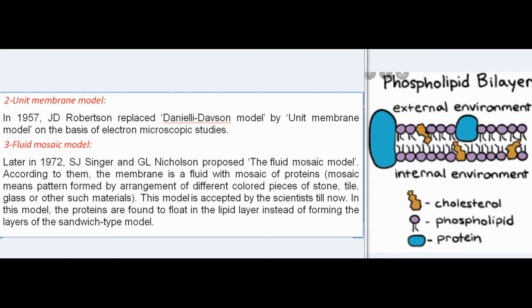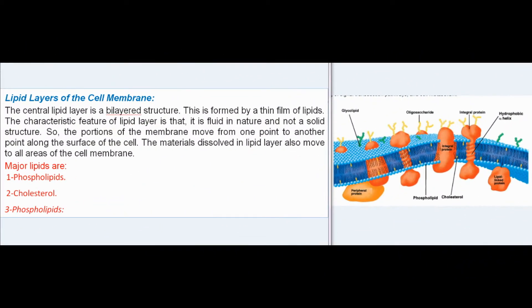In the fluid mosaic model, proteins are found to float in the lipid layer instead of forming the layers of the sandwich-type model. The central lipid layer is a bilayer structure formed by a thin film of lipids. A characteristic feature of the lipid layer is that it is fluid in nature and not a solid structure, so portions of the membrane move from one point to another along the surface of the cell. Materials dissolved in the lipid layer also move to all areas of the cell membrane.